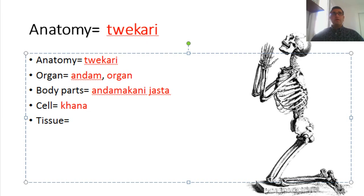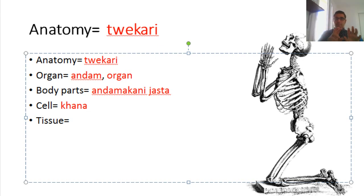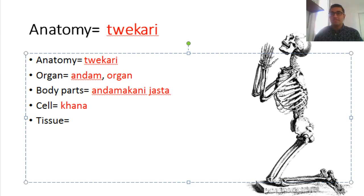Cell can also mean other things, just like in English. If you use khana as a suffix, it can mean place. For example, nekhosh means sick in Kurdish. If you say nekhoshkhana, the khana here is a suffix meaning hospital — a place for patients. Another example is chahana, which means the place for tea, so it's a type of cafe.